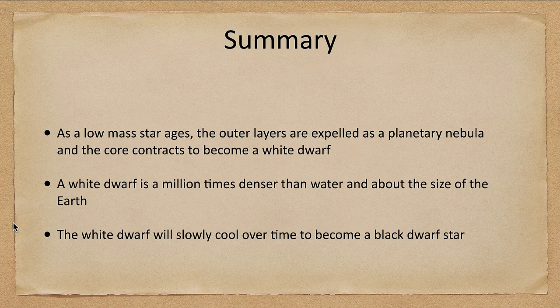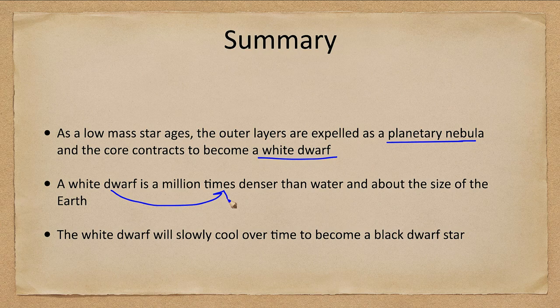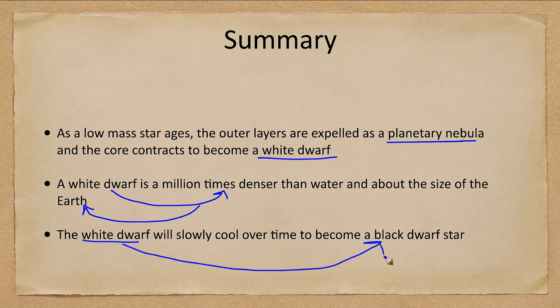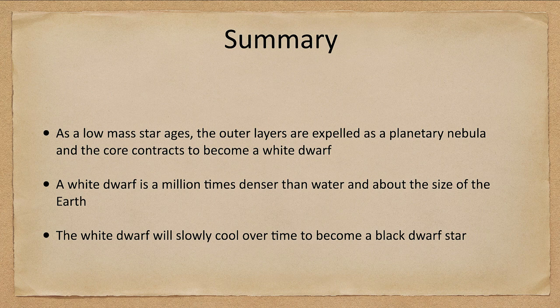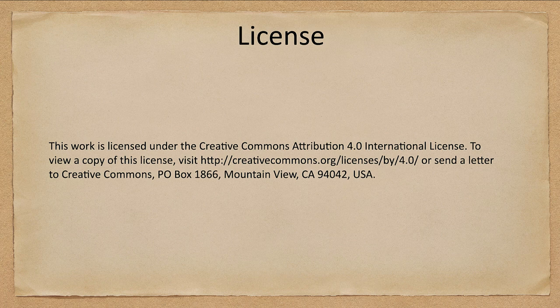To summarize: in a low-mass star, the outer layers become a planetary nebula while the core contracts to a white dwarf — a star a million times denser than water and about the size of Earth. The white dwarf will cool slowly over time to eventually become a black dwarf, but there has not been enough time in the history of the universe for this to happen to any white dwarf yet. That concludes this lecture on the deaths of low-mass stars. We'll be back next time for another topic in astronomy — have a great day, everyone!